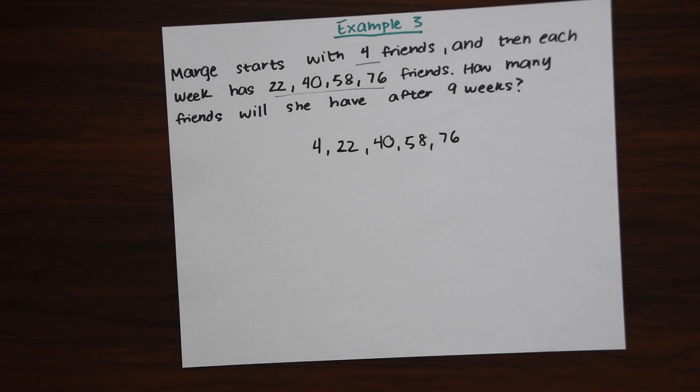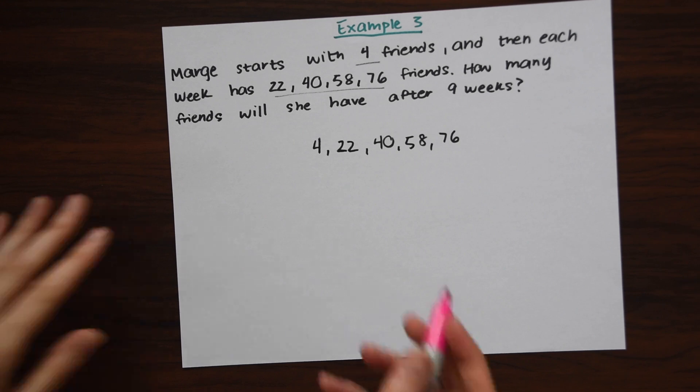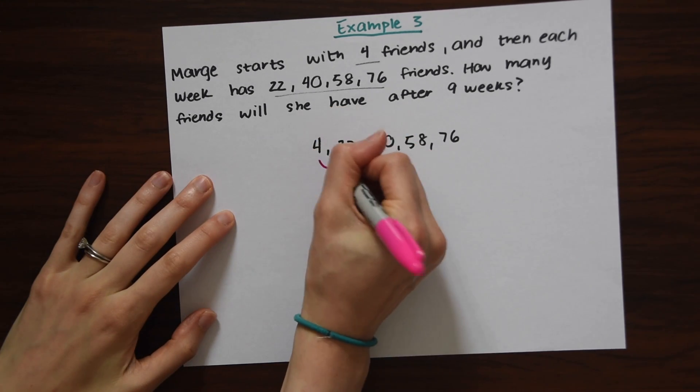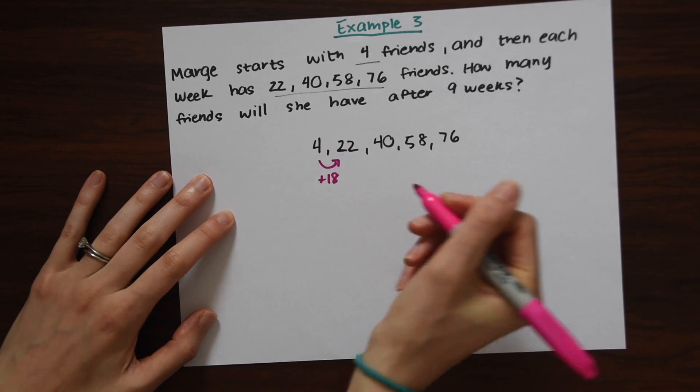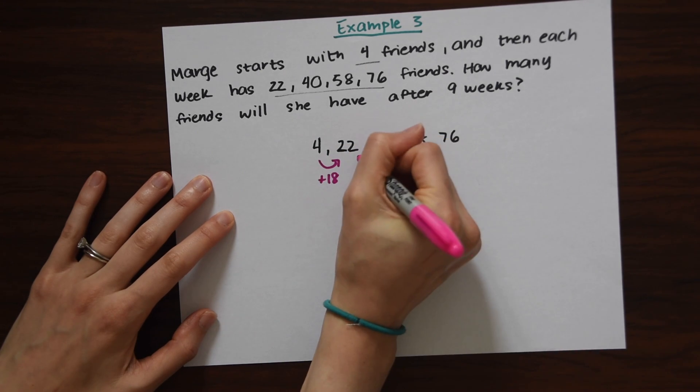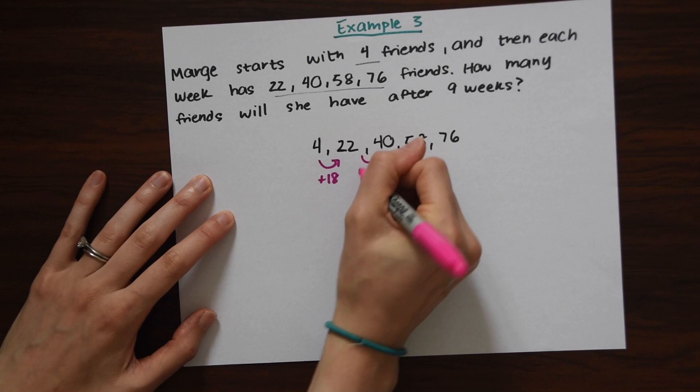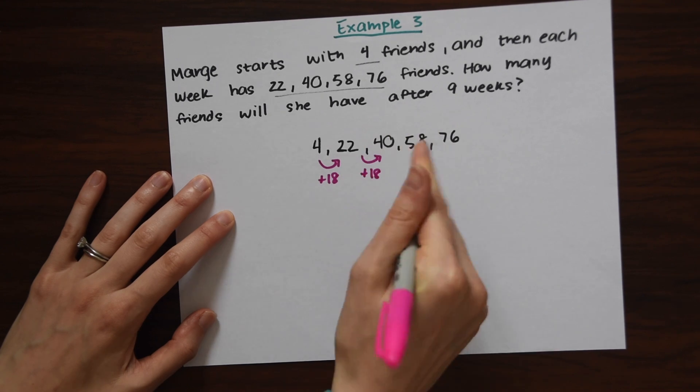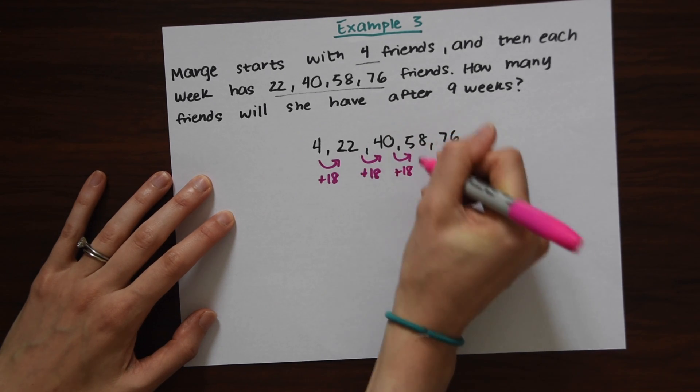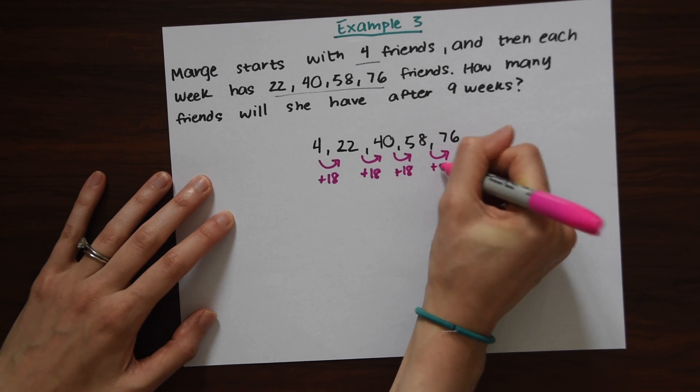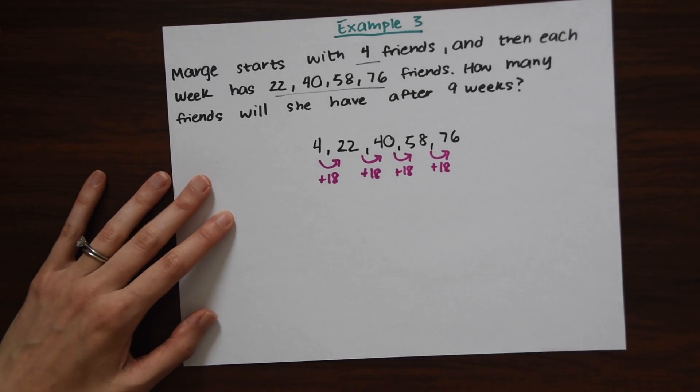So the first thing we're going to want to do is look for the pattern. So how are these numbers related to each other? 4 plus 18 is 22. And let's see if this pattern continues. 22 plus 18 equals 40. And 40 plus 18 equals 58. And 58 plus 18 equals 76. So we have our common difference right away.